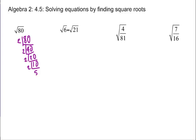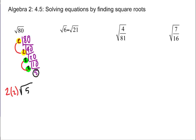Since it's a square root, we look for pairs of 2s. In this case, I have one pair of 2s right here, and another pair of 2s right here. In order to work a square root, I take pairs out. I've got one pair times another pair, and what's left on the inside of the square root is the 5. So the square root of 80 reduces to 4 square roots of 5.